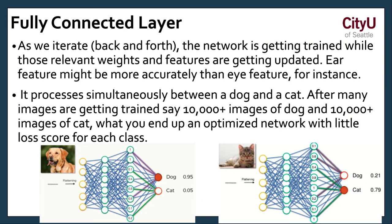While the networks are getting trained, those relevant weights features are getting updated. Ear features might be more accurate than eye features. For instance. If there is something that is a striking feature for a certain classification, it process simultaneously between a dog and a cat. After many age images are getting trained, it would now know that, hey, after 10,000 images, it seems that this is a dog and this is a cat and not just dog everything. That's a dog.